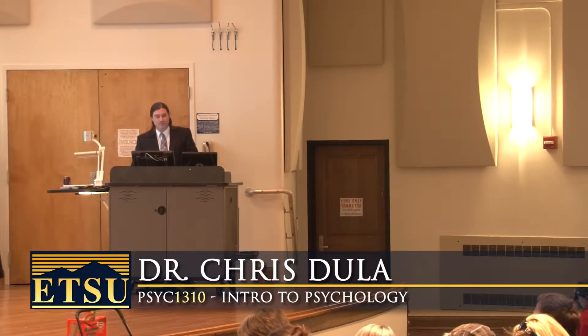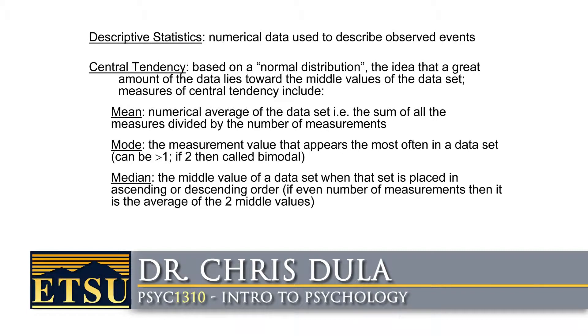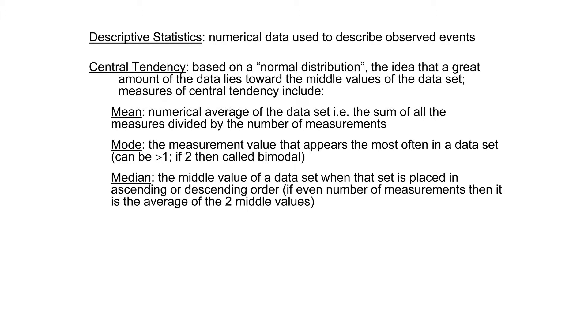We were leaving off at this thing called statistical normative distribution. We talked about central tendency, the mean, the median, and the mode.